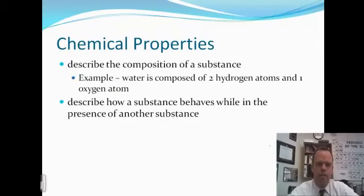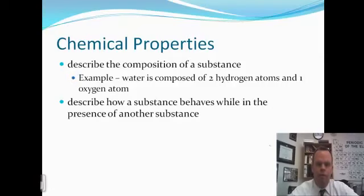Chemical properties describe the composition of a substance — how many molecules are put together and the way those molecules behave when reacting with other compounds. For example, water has two hydrogen atoms and one oxygen atom. We can describe the chemical property of water as its composition — H₂O — and also describe the way it reacts with other compounds to form new substances.